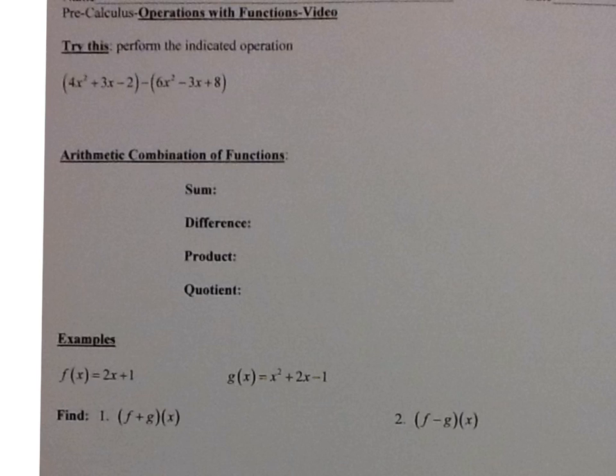So when you subtract polynomials, you have to remember to distribute that negative 1. So we have 4x squared plus 3x minus 2, distribute the negative 1, we get negative 6x squared plus 3x minus 8.